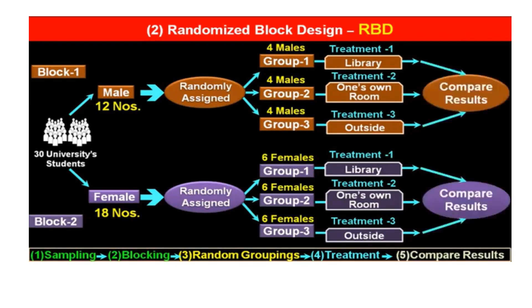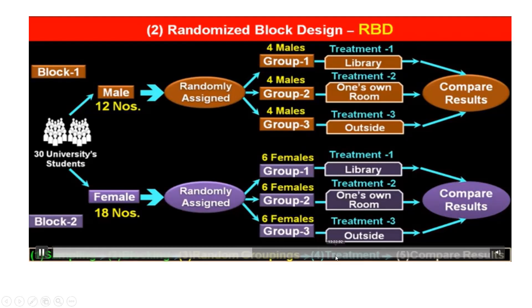Now we will compare the results of both blocks. The one additional element here is blocking — we divided students into two blocks, male and female. Then we randomly assigned the groups. Then we applied the treatment. Then we compare results. So this is completely randomized block design.